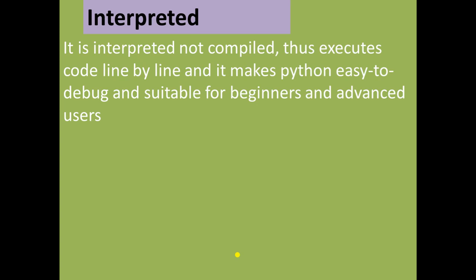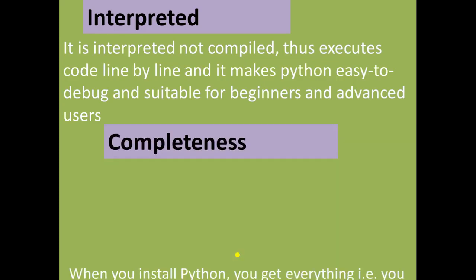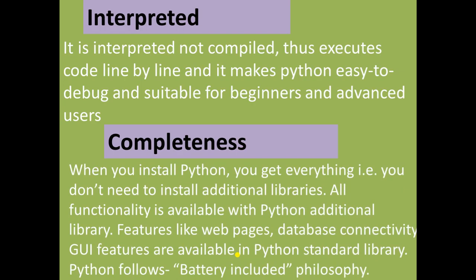Next is interpreted language. Python is interpreted, not compiled, so it executes code line by line. This makes Python easy to debug and suitable for beginners and advanced users. The interpreter converts code into machine language line by line, whereas a compiler converts the whole program at once.